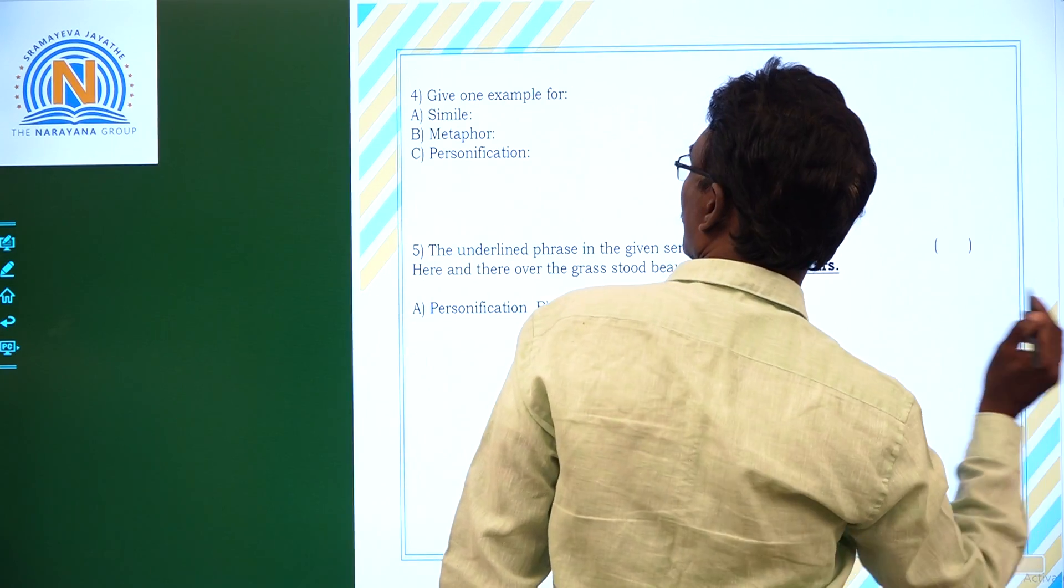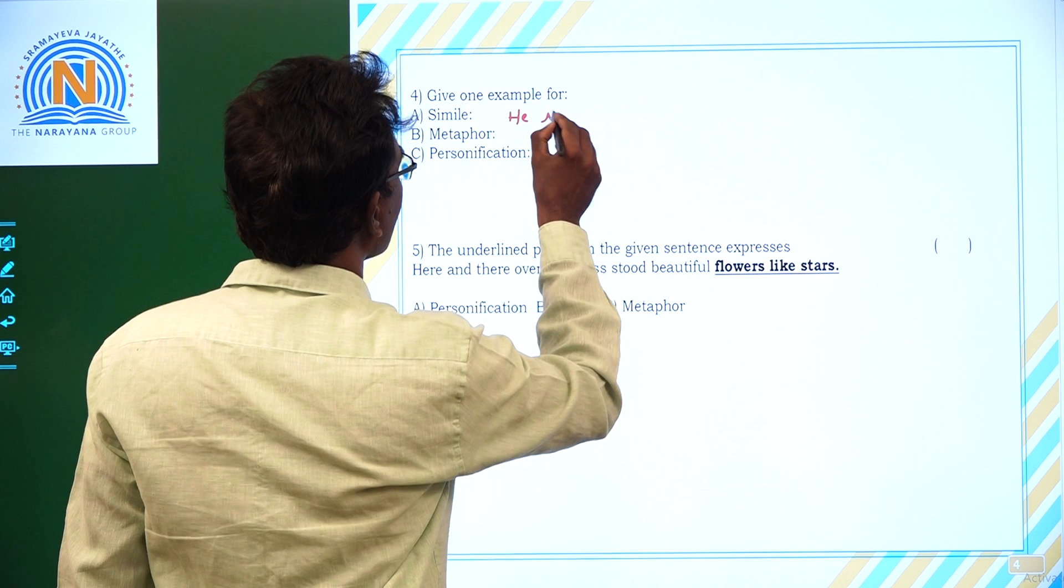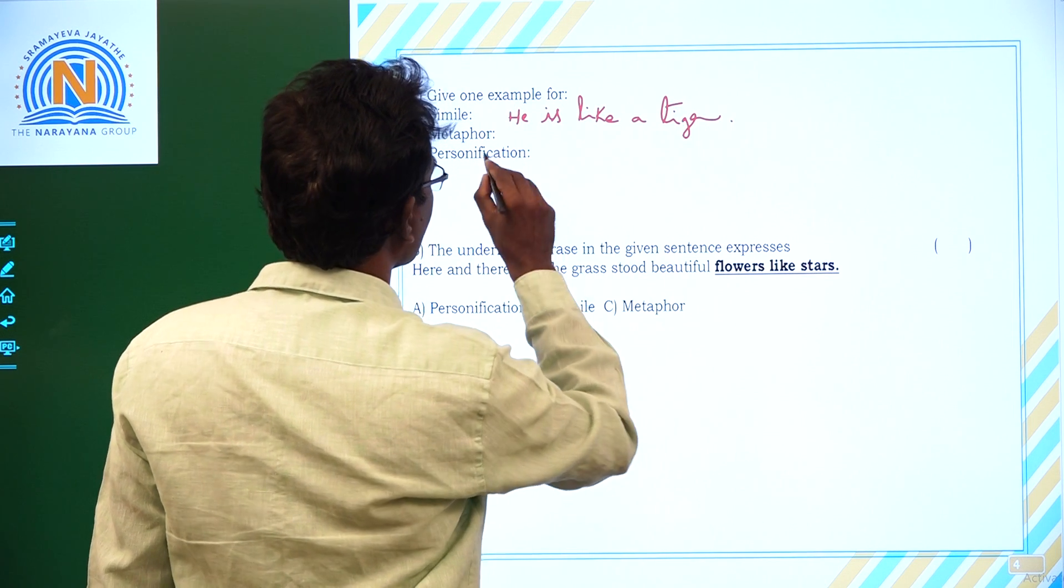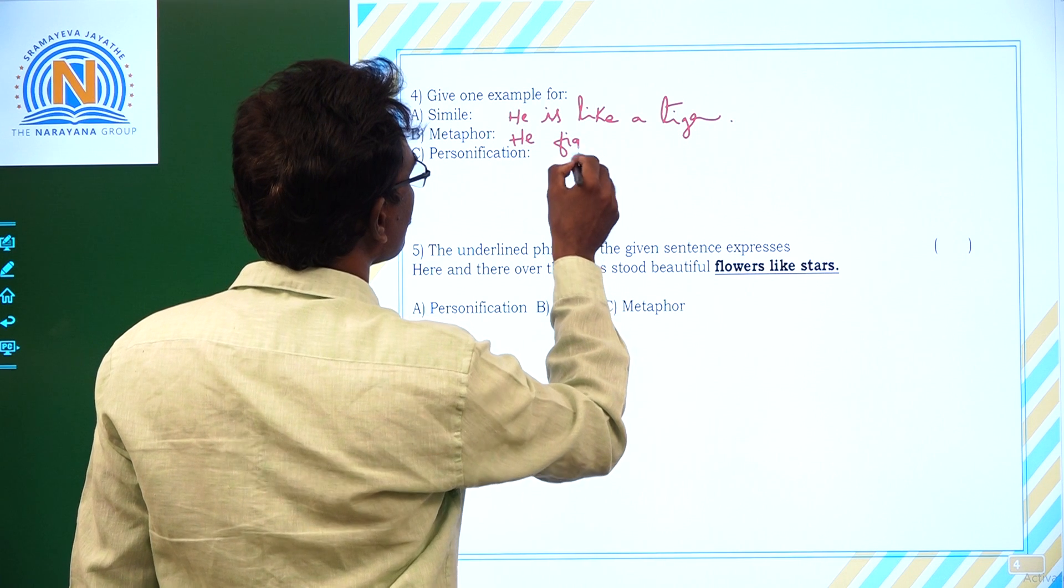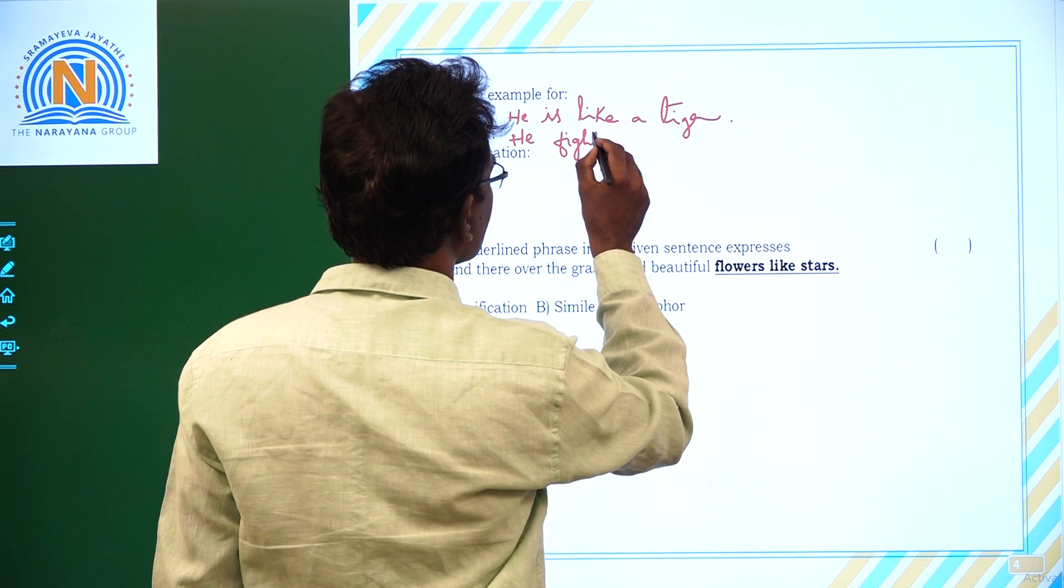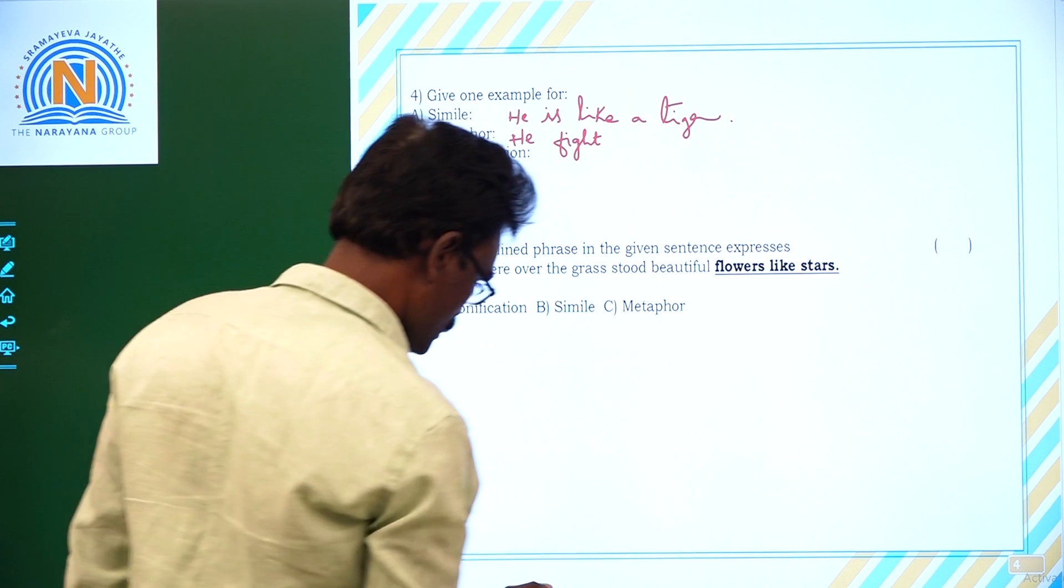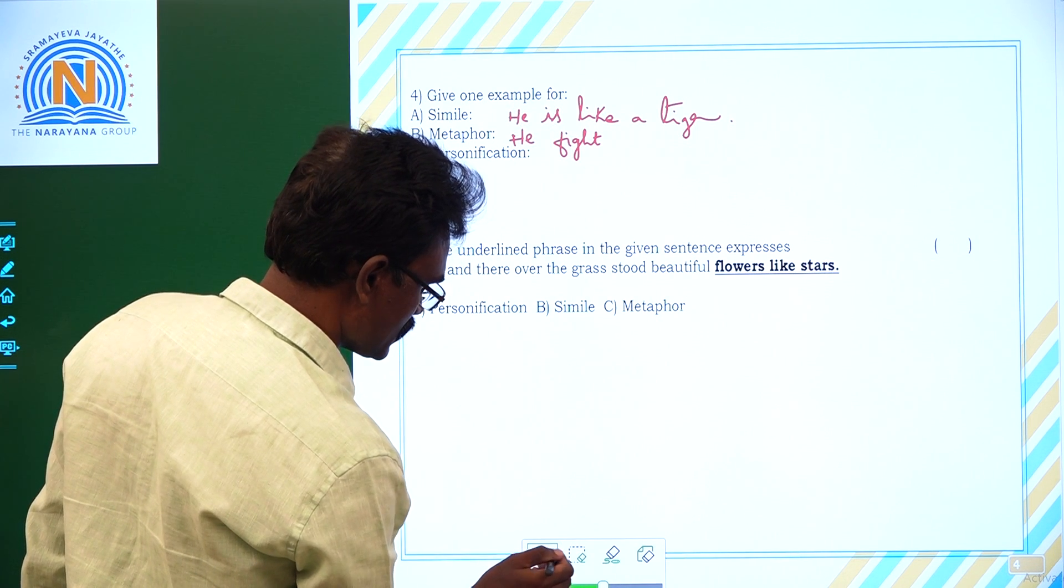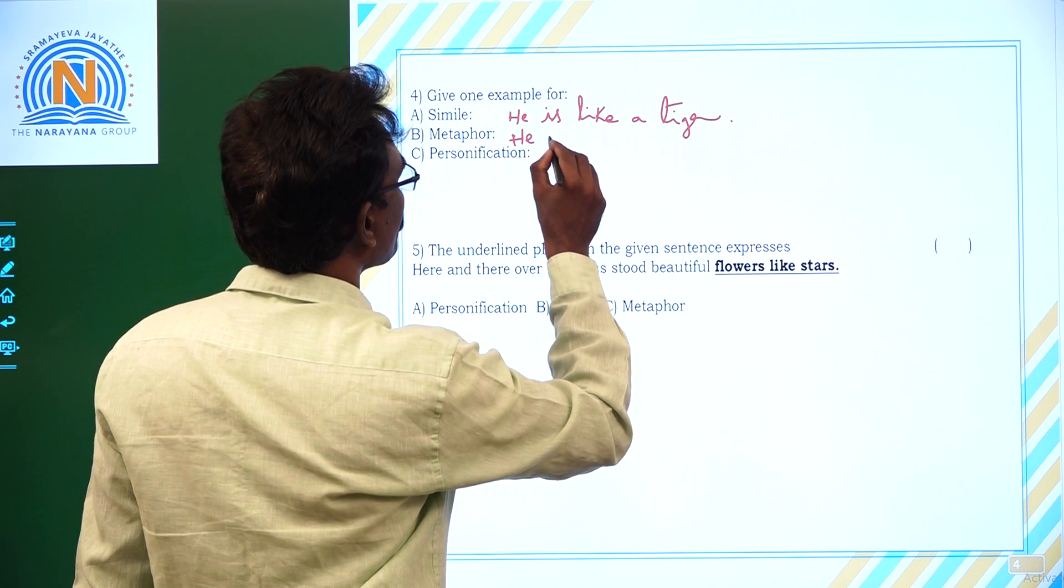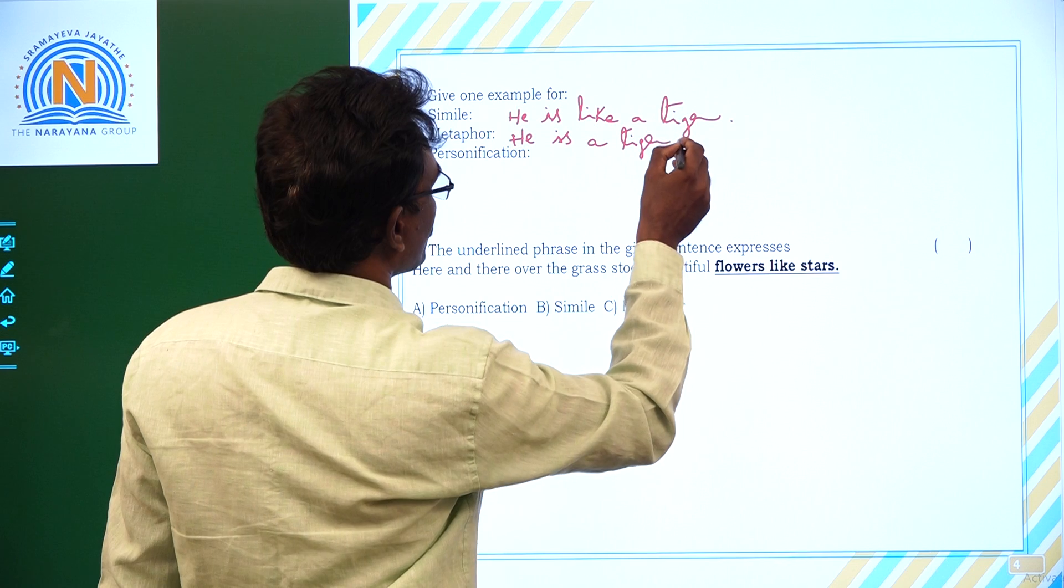Now give one example for simile. He is like a tiger, so this is simile. Metaphor: he is a tiger in the battlefield, so this is metaphor.